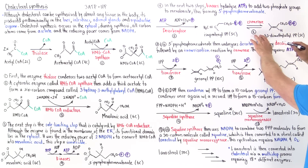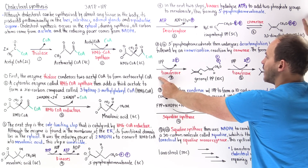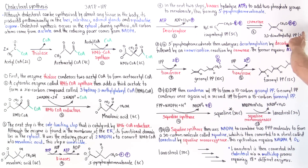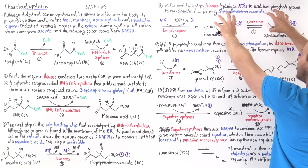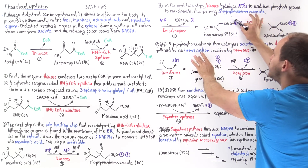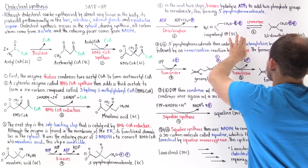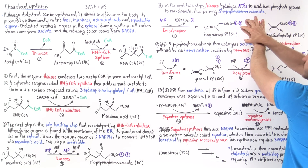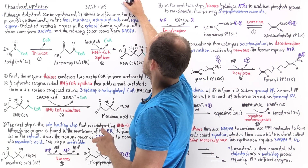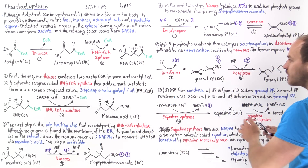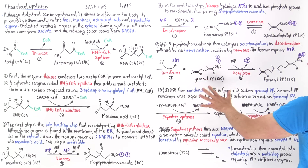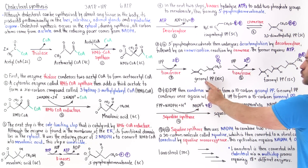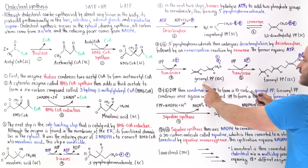Once we form DPP, the next step is catalyzed by a transferase enzyme, which takes an IPP molecule and attaches it onto a DPP molecule, combining these two five-carbon molecules. Forming each of these molecules requires three ATPs, so combining them means we've used six ATP molecules so far. We now form a 10-carbon molecule — geranyl pyrophosphate.